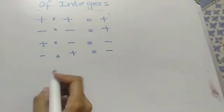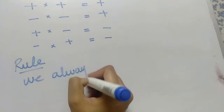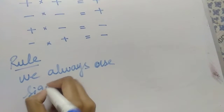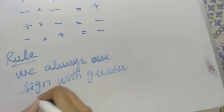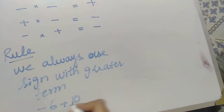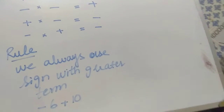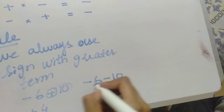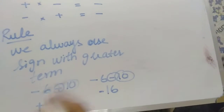You should know a rule that we always use the sign with the greater term. Like if we have minus 6 and plus 10, we subtract and it will be 4, and with the bigger term being plus, it will be plus 4. And if we have minus 6 and minus 10, minus minus is plus so it will be 16, and with the bigger term being minus it will be minus 16.